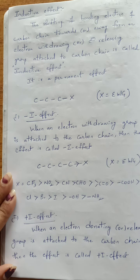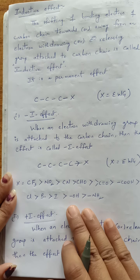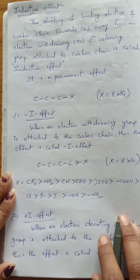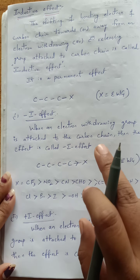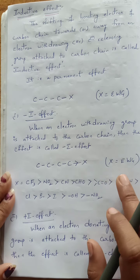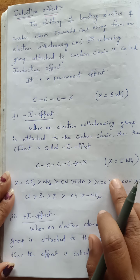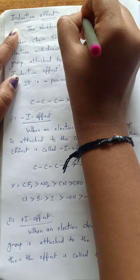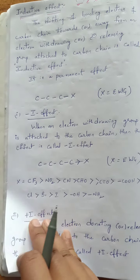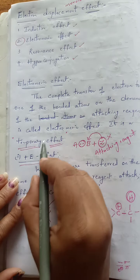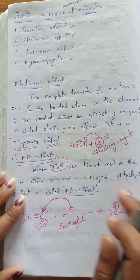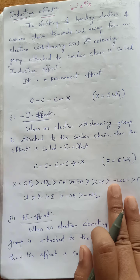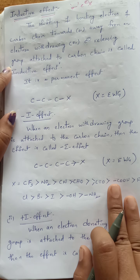Now we will see the second type of electron displacement effect, that is inductive effect. Inductive effect is also a kind of electron displacement where electrons move from one place to another. Inductive effect deals with only sigma electrons, whereas electromeric effect deals with only pi bonded electrons.